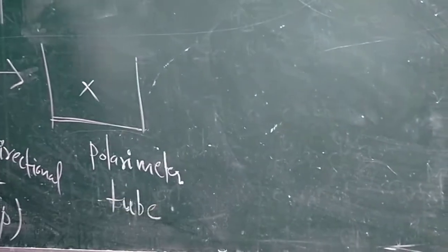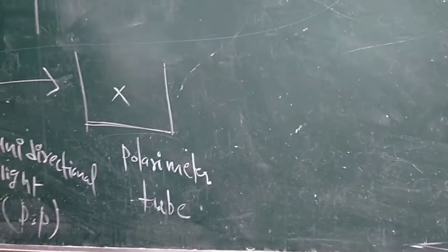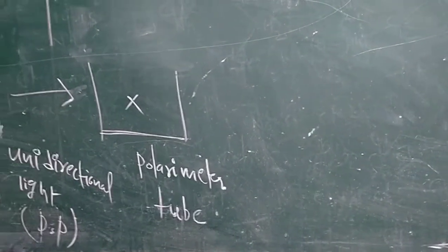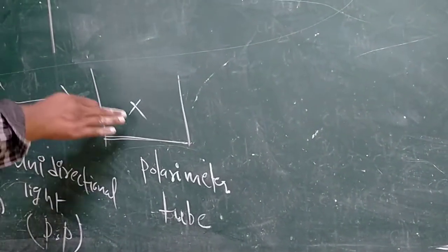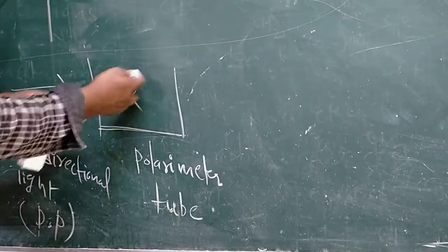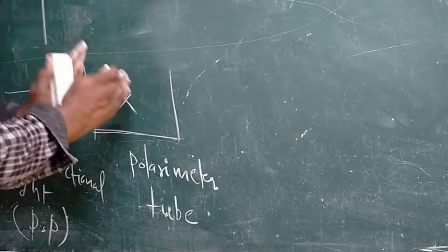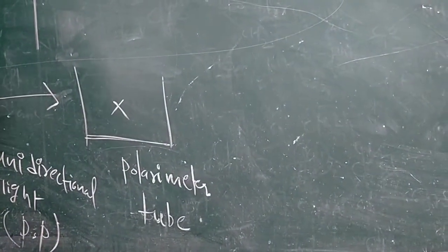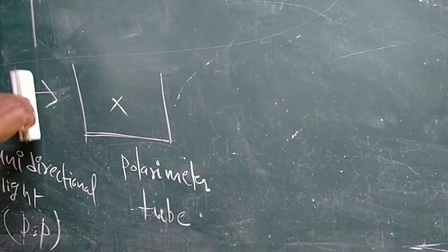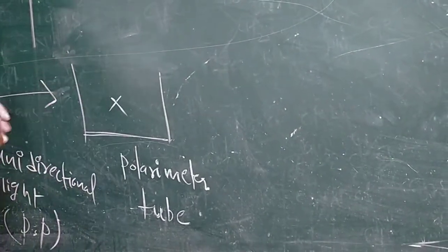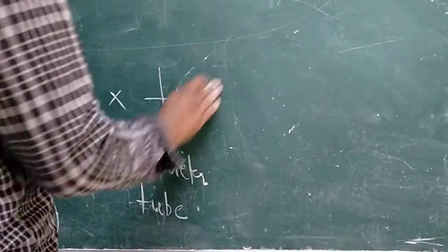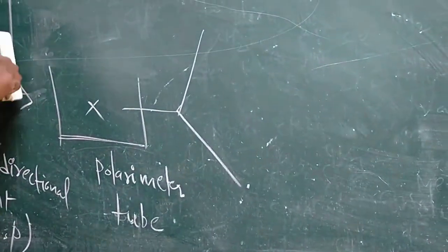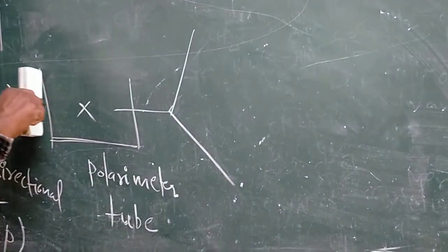This multidirectionally propagated ordinary light, when passed through the Nicol prism, gives unidirectional plane polarized light. This unidirectional light is then passed through the polarimeter tube, which contains compound X in solution.